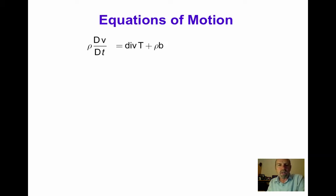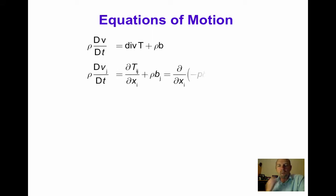The equations of motion are: ρ times the material derivative of the velocity with respect to time equals the divergence of the stress plus ρ times the body force vector. In index notation, this is ρ Dv_j/Dt equals ∂T_ij/∂x_i plus ρ b_j.